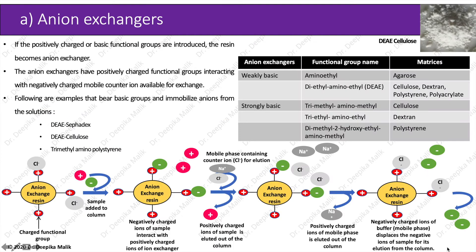Now let us see different exchangers. First is the anion exchangers. If the positively charged or basic functional groups are introduced, the resin becomes an anion exchanger. The anion exchangers have positively charged functional groups interacting with negatively charged mobile counter ions available for exchange. Examples that bear basic groups and immobilize anions from the solution include diethylaminoethyl cellulose (DEAE cellulose) or trimethylaminopolystyrene. The table shows weakly and strongly basic anion exchangers along with their corresponding functional groups that can be attached to various matrices.